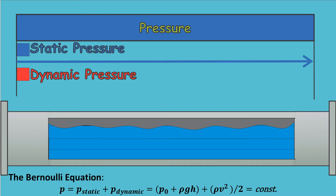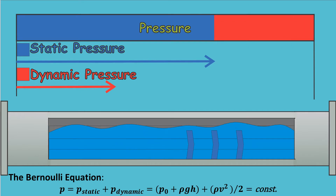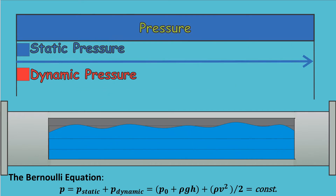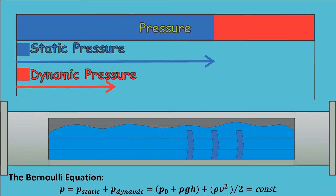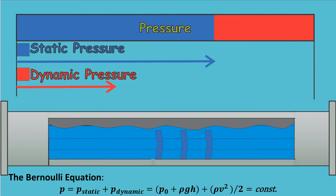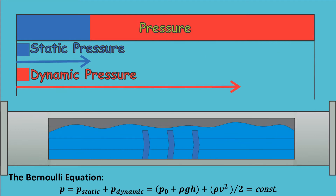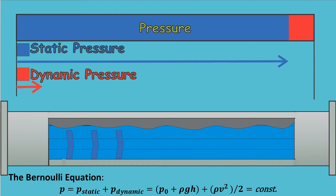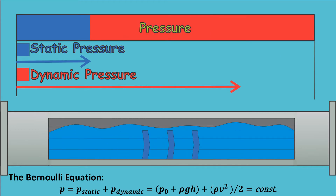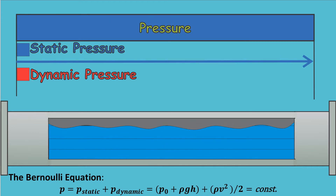In fluids there exist two sorts of pressures: the dynamic pressure and the static pressure. Bernoulli's equation shows that the sum of those two pressures is constant, which means when one of the two pressures increases, the other pressure decreases by the same amount.